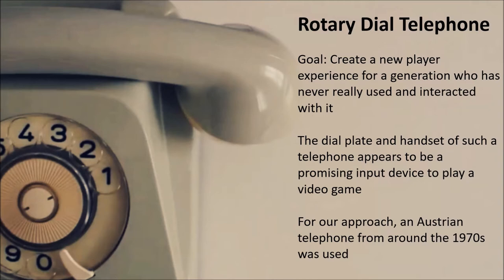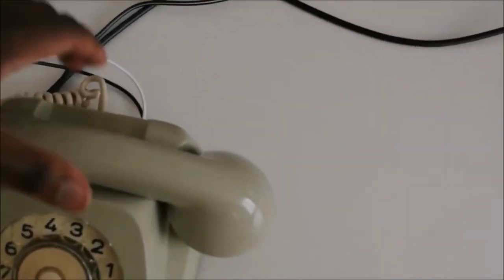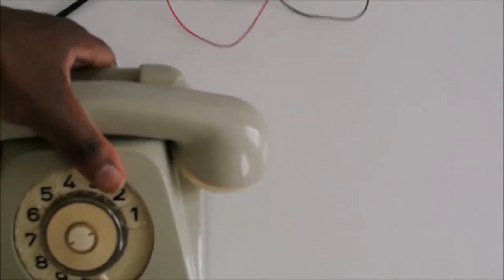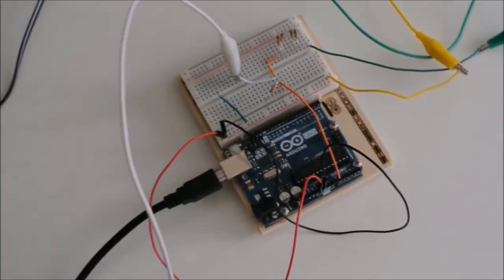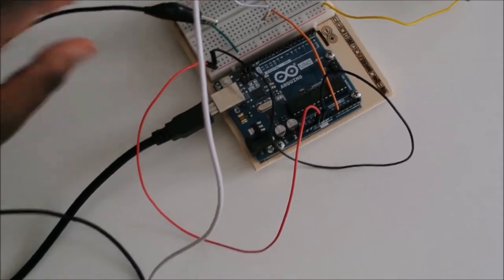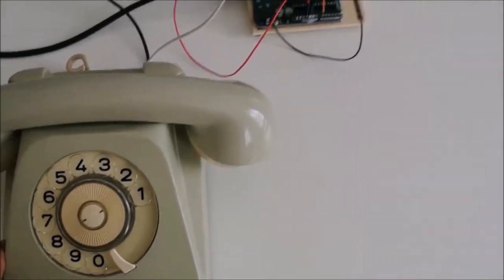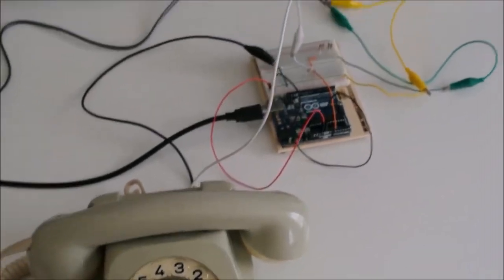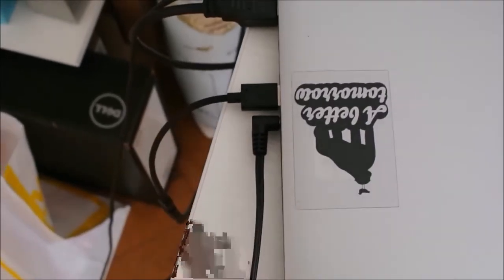For our approach, an Austrian telephone from around the 1970s was used. So let us start with a short demo. With the use of a microcontroller, the dial numbers are translated via software into mouse movements. Here you can see the microcontroller — it's connected with the telephone, and this is connected with a laptop or PC.